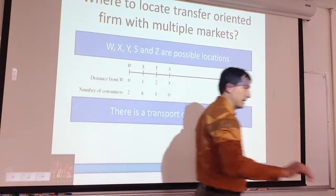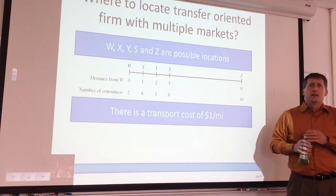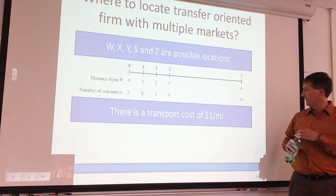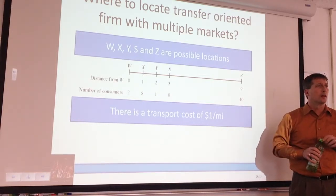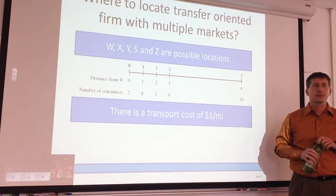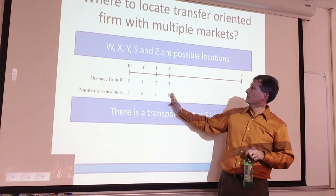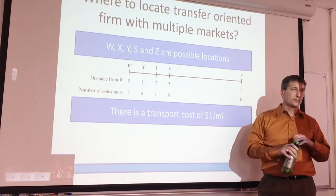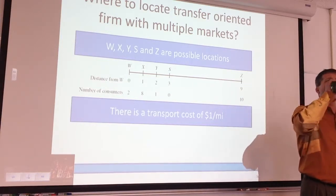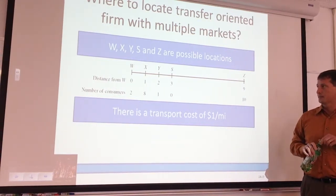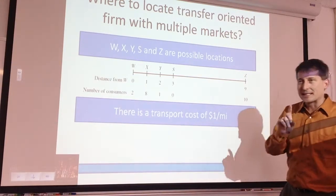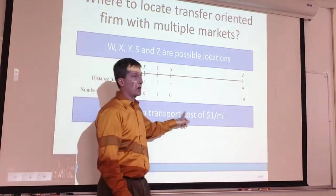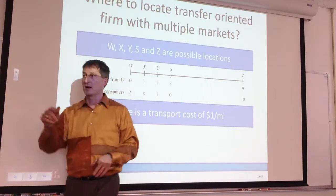Z. Why do you say that? Because it's the furthest from W and it has the most customers. Okay, so we've got a lot of customers down there. Other thoughts? Or about halfway? About halfway — and why is that important? So as far as getting the customers, we're going to get all of them — it's just a matter of how much cost there is. So we're thinking about cost here.